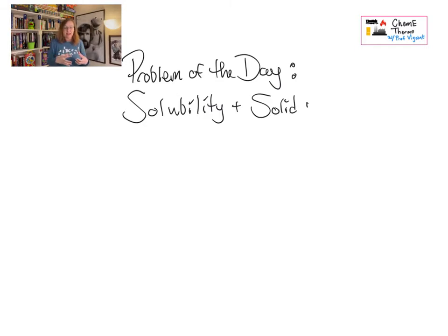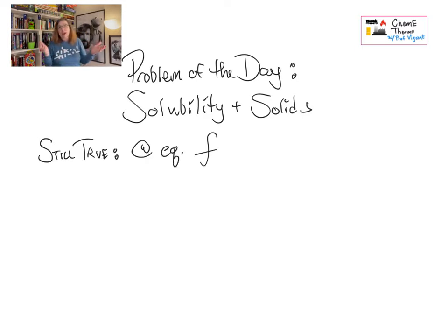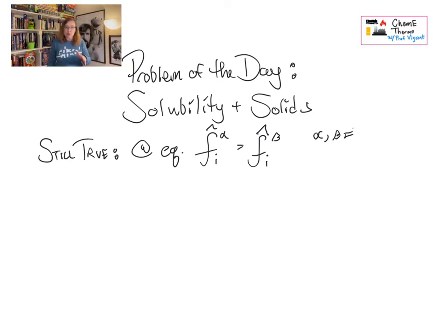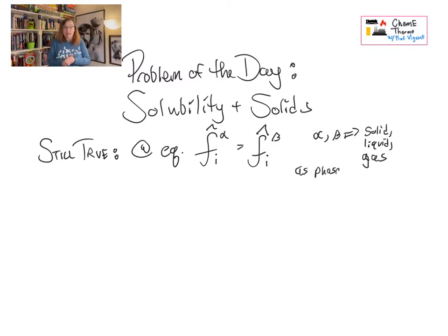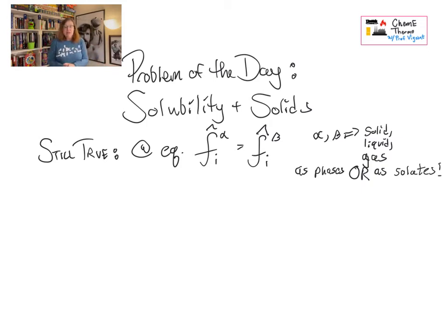Today we are going to focus on the idea of solubility and solids — that is, phase equilibrium that comes about because something is dissolving into something else, usually a vapor or a solid into a liquid, or when solids are at equilibrium with a liquid or a vapor. It is still true that at equilibrium, the fugacity of substance i in phase alpha is equal to the fugacity of substance i in phase beta. Those may be solids, liquids, or gases, and it applies when we're talking about something that is dissolving just as much as the bulk phase.